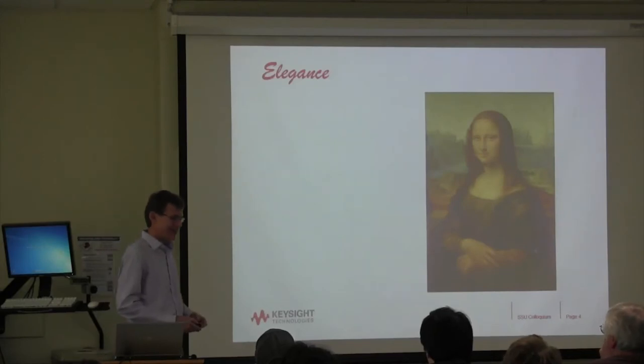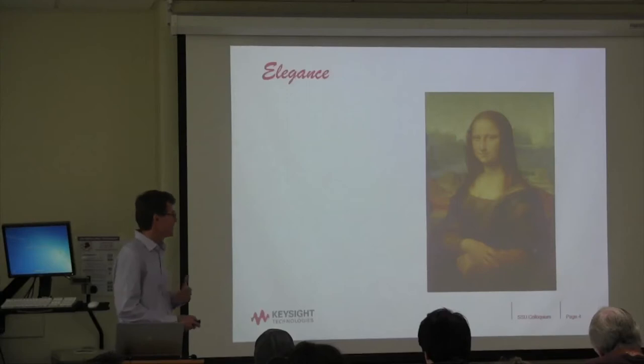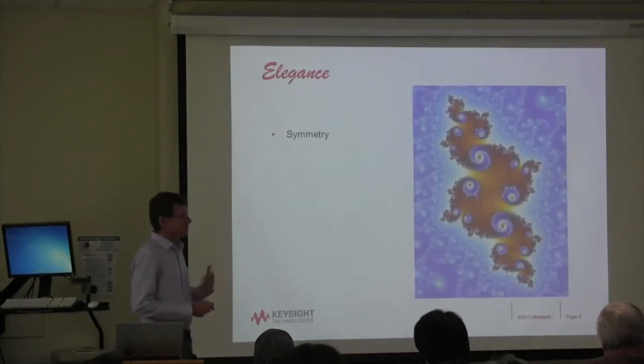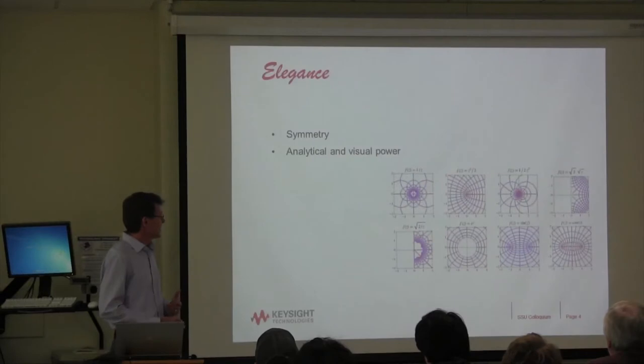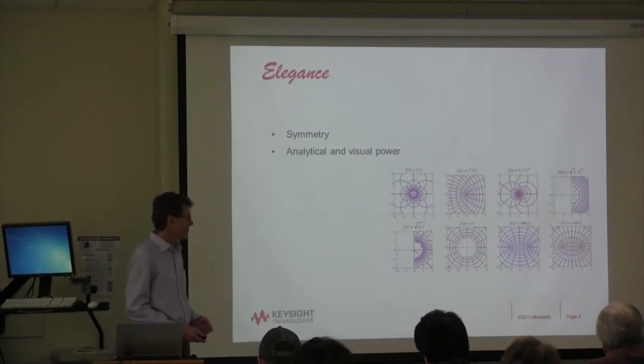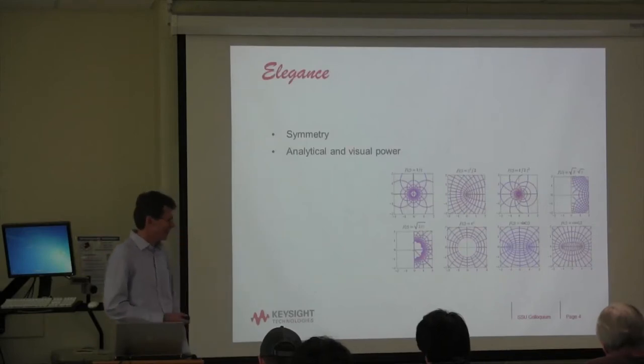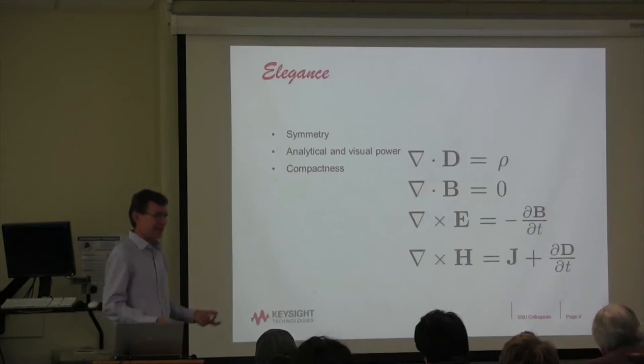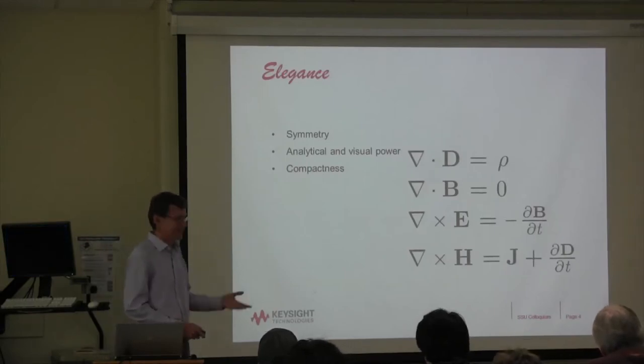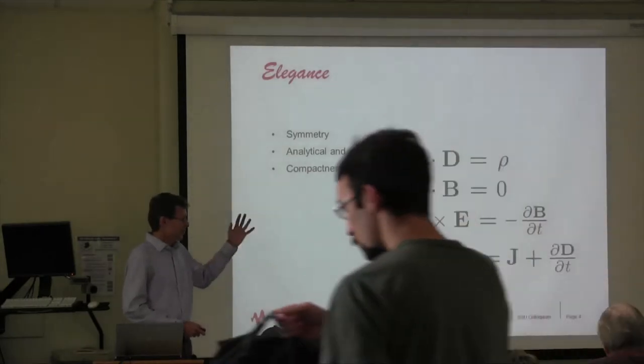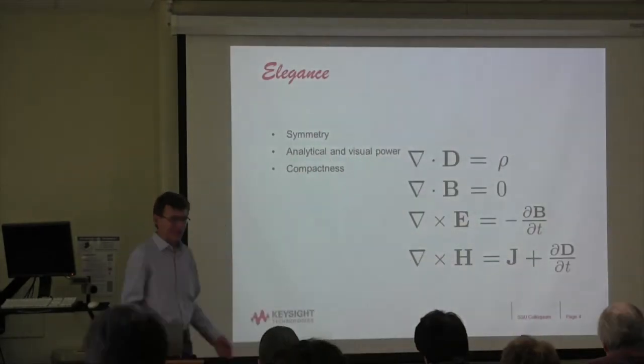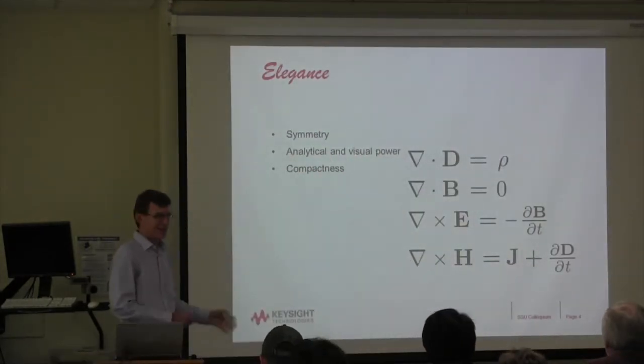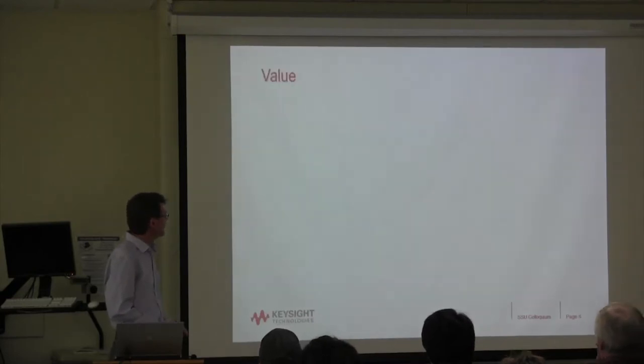Let's jump in a little bit about elegance. Because elegance and beauty is in the eye of the beholder. Well, for a mathematician and a physicist like myself, beauty involves symmetry, as well as analytical and visual power of the mathematics that I'm using at the particular time. In this case, it's the complex plane, which we'll be talking about a lot here in this talk. And then finally, just the compactness of the equations we're involved in using. And here, this is Maxwell's equation. This four set of equations describes all the classical electrodynamics. Very compact, very powerful.